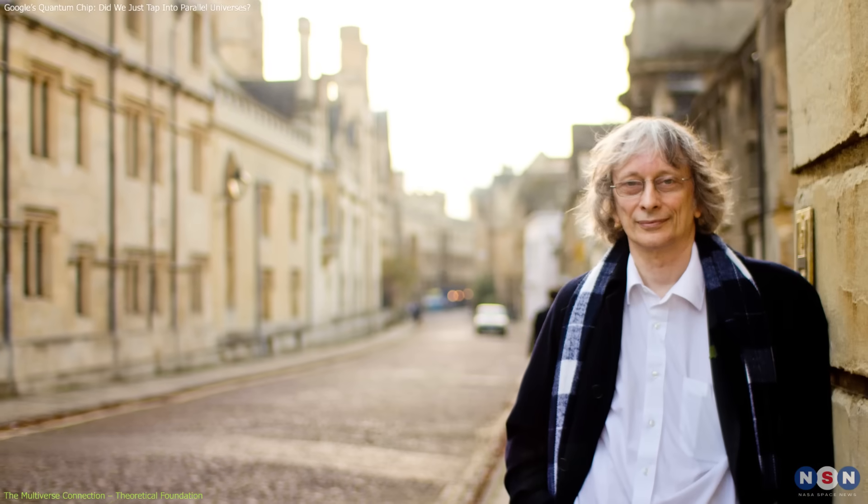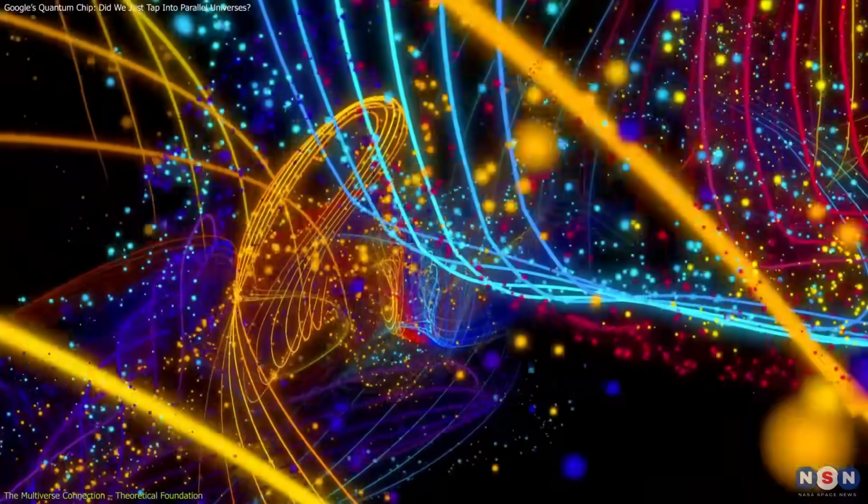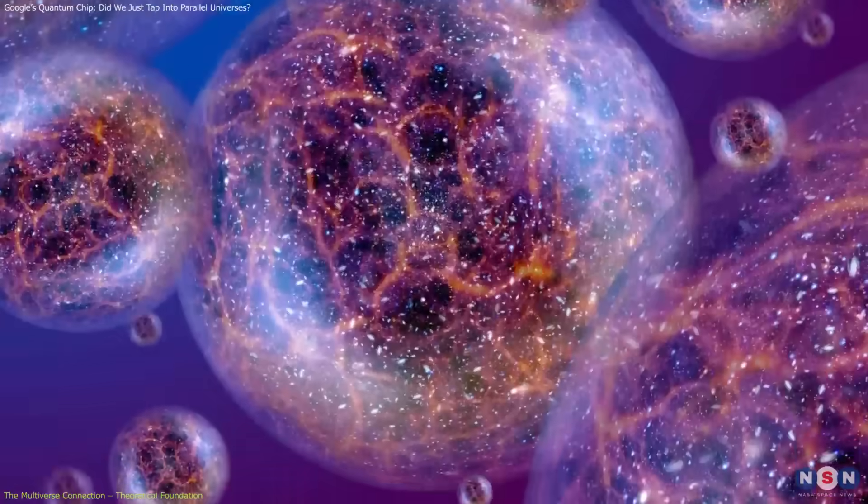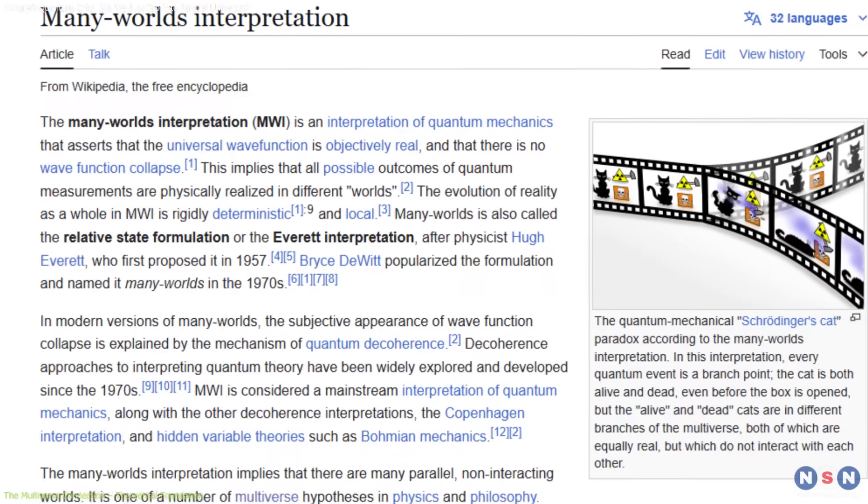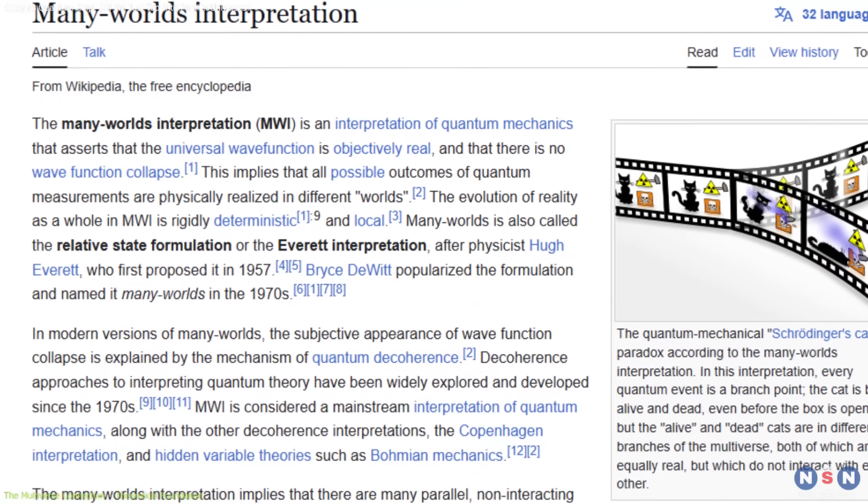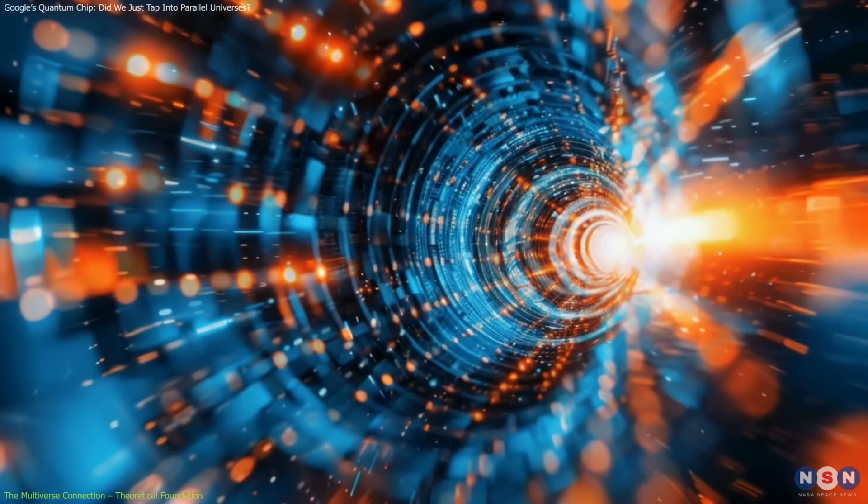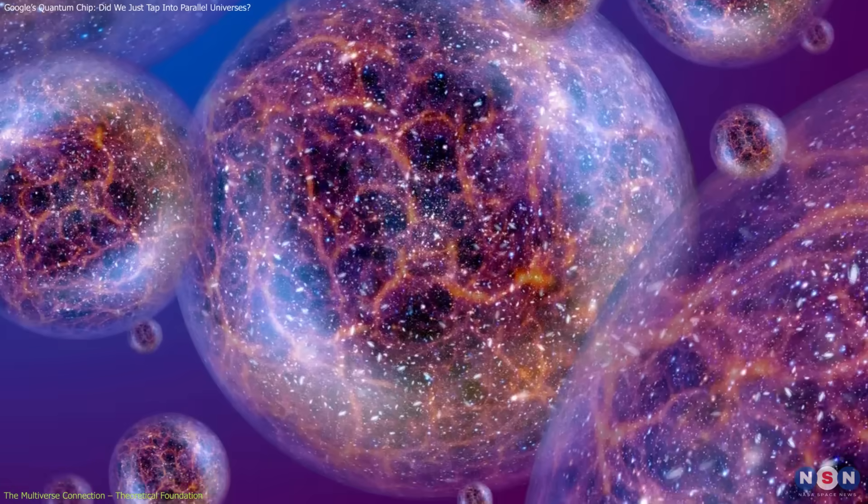But David Deutsch, a pioneer of quantum theory, proposed something radically different. What if those other possibilities don't disappear? What if they exist in separate, parallel universes? According to Deutsch's Many Worlds Interpretation, every outcome of a quantum event happens, but in its own universe.